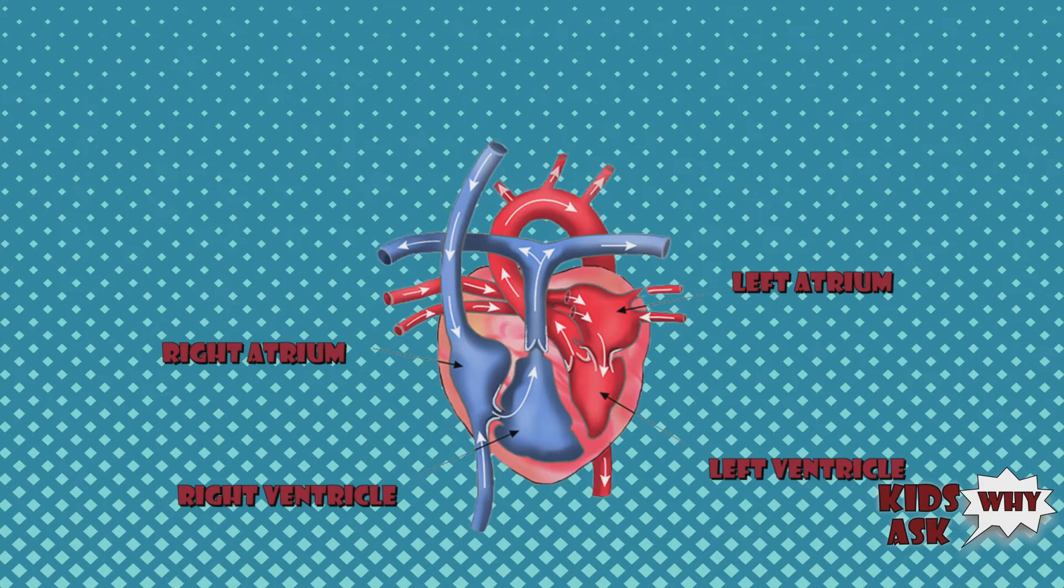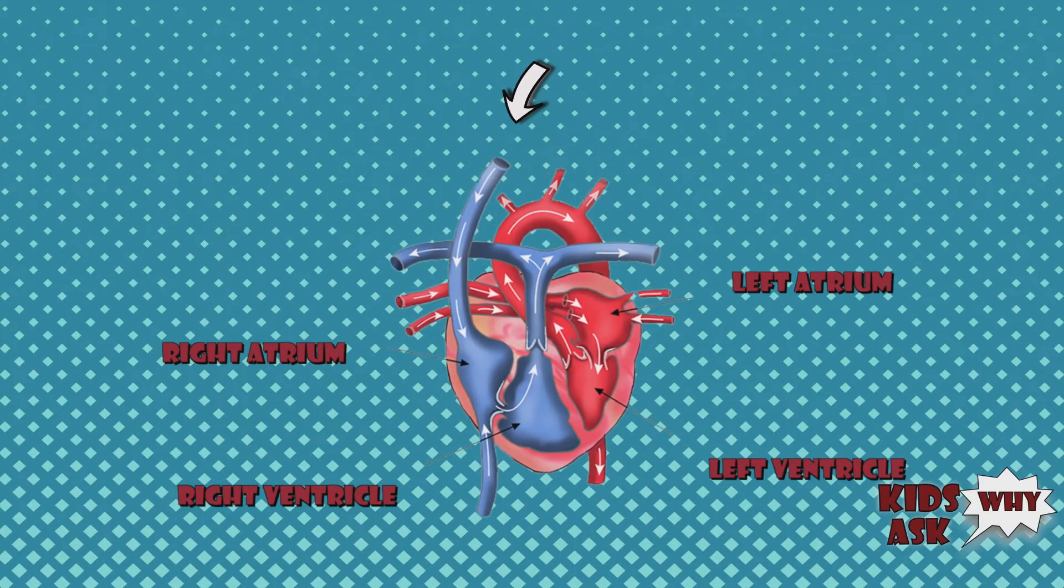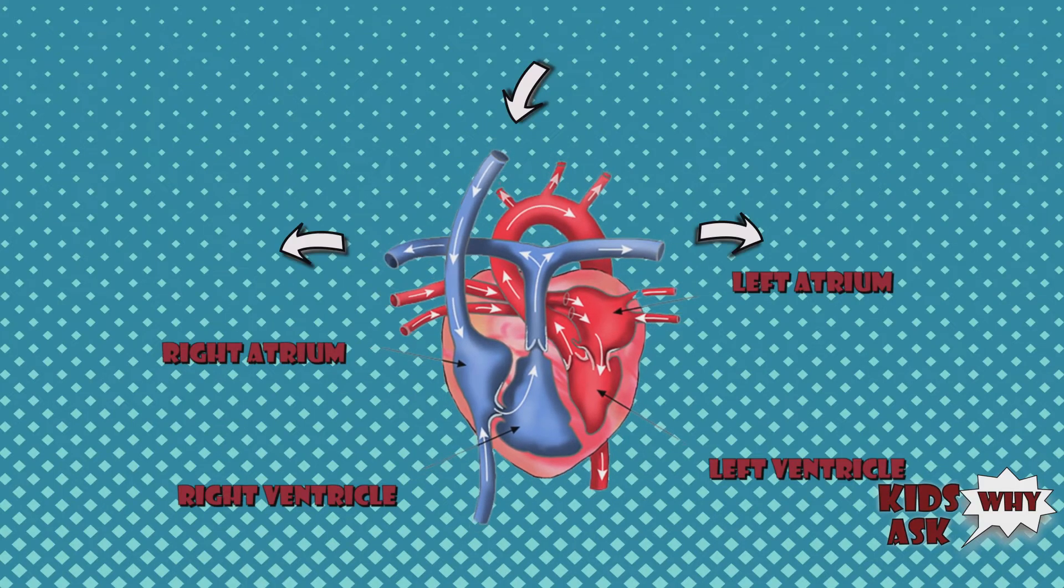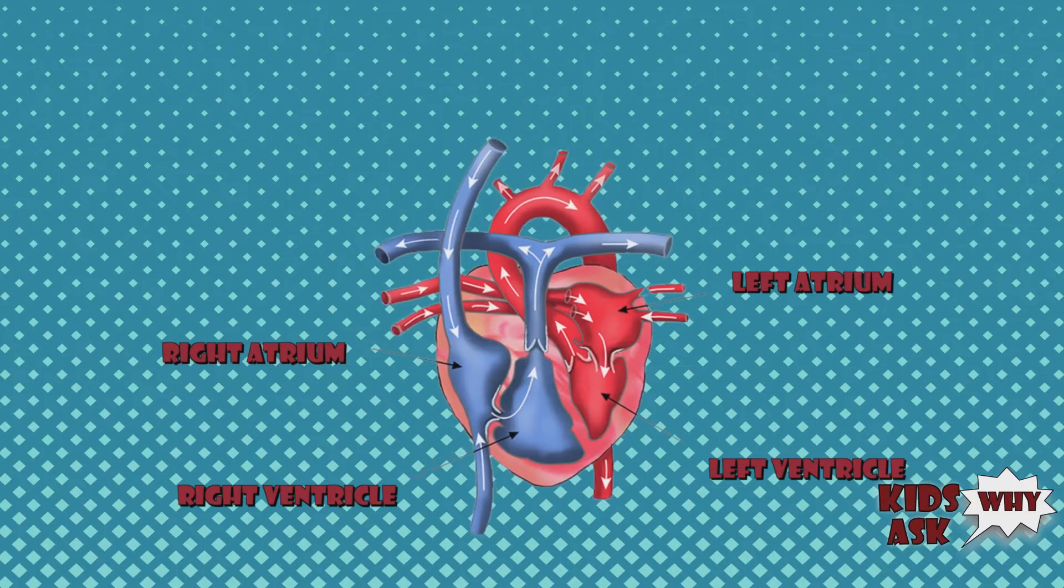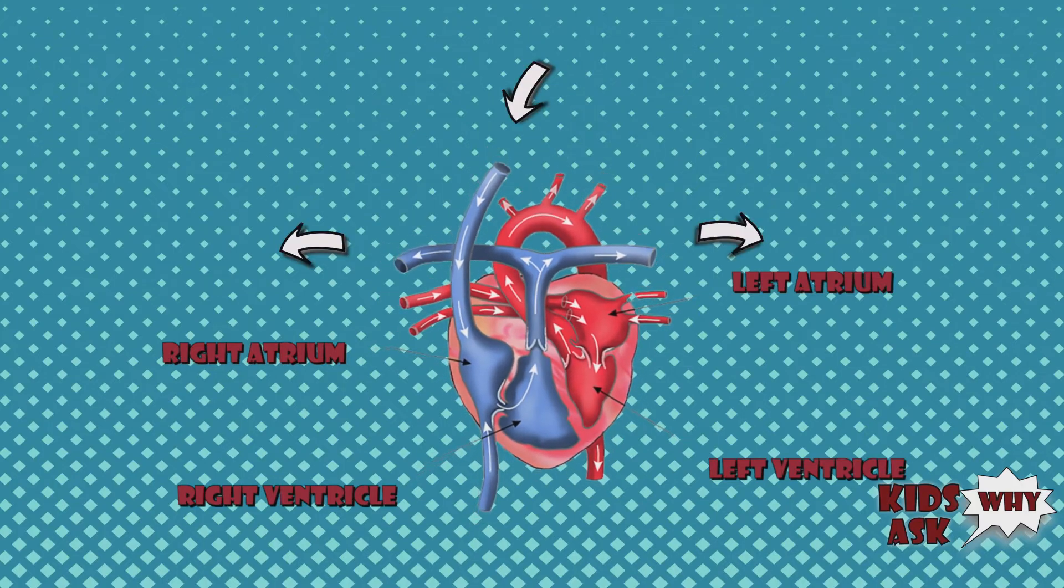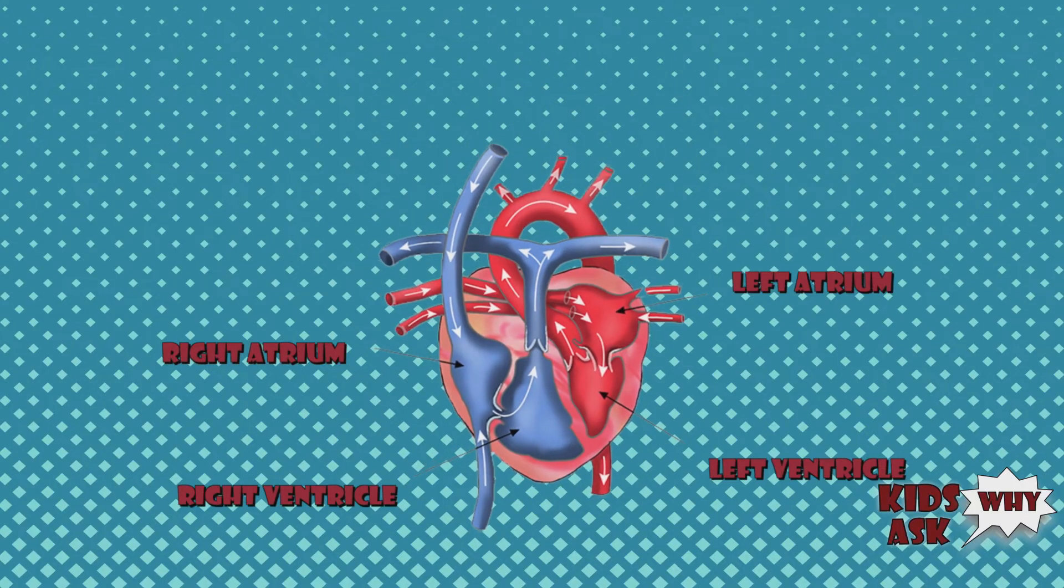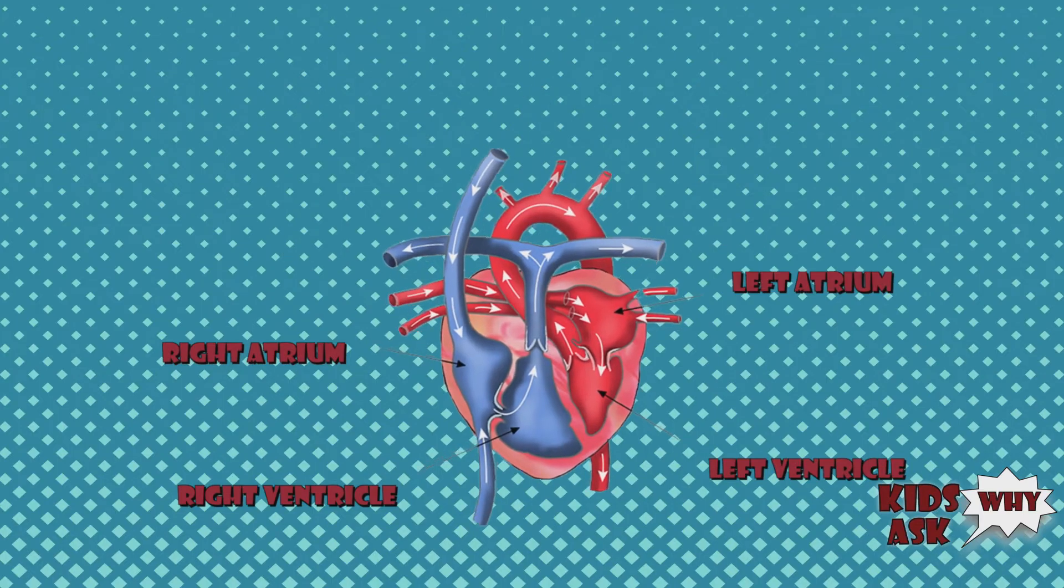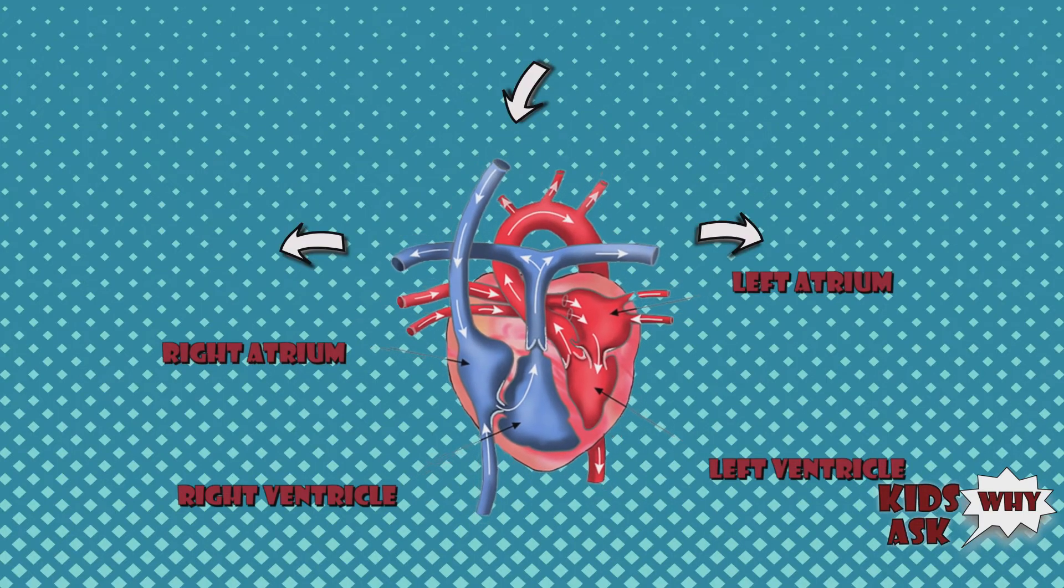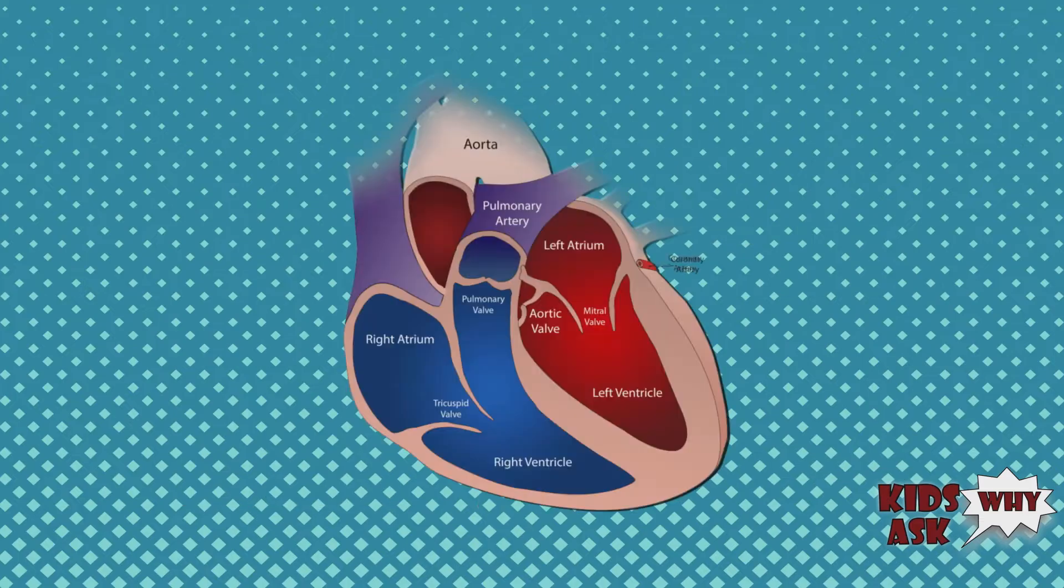The ventricles then squeeze, pumping oxygen-rich blood out of the heart. While the ventricles are squeezing, the atria refill and get ready for the next contraction. The heart pumps oxygen-rich blood to the rest of the body.